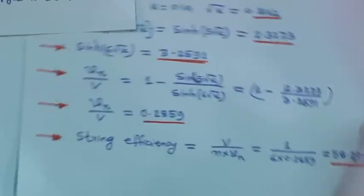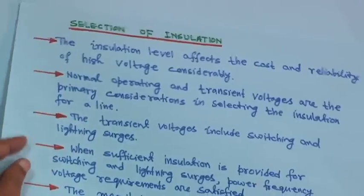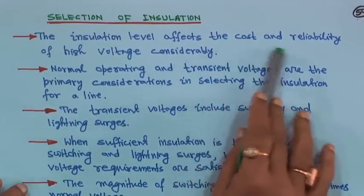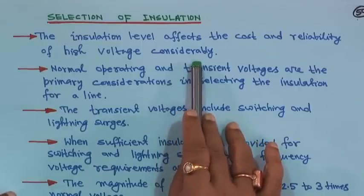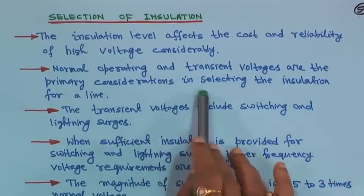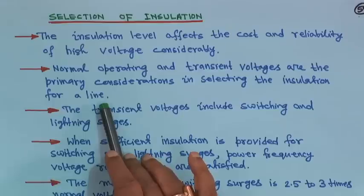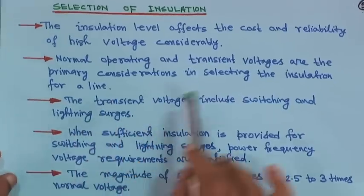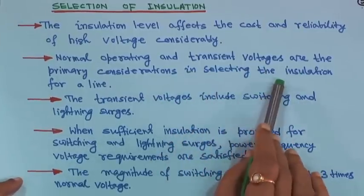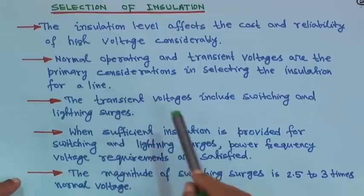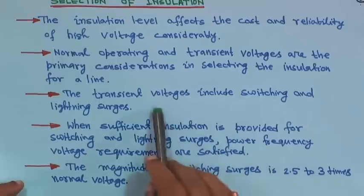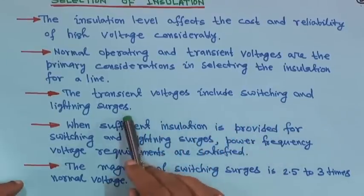Next we will come to the selection of insulation. The insulation level affects the cost and reliability of high voltage considerably. Normal operating and transient voltages are the primary consideration in selecting the insulation for a line. The transient voltages include switching and lightning surges.